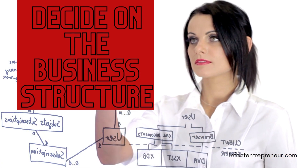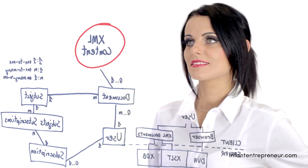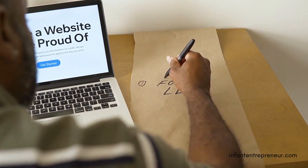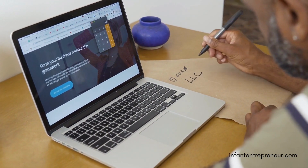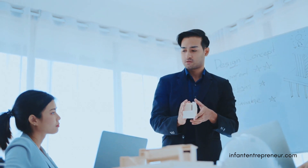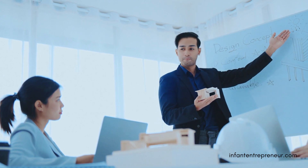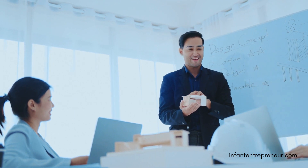Step four: decide on your business structure. The business structure you choose will dictate the legal and tax requirements you need to meet. Most small business owners choose from: sole proprietorship — the simplest structure but lacking limited liability; partnership — may appeal if you have a partner but liability is unlimited; limited liability company (LLC) — offers limited liability without the complexity of incorporation; or corporation — provides limited liability but is more complex to set up. It's always a good idea to consult with an attorney and a tax professional.